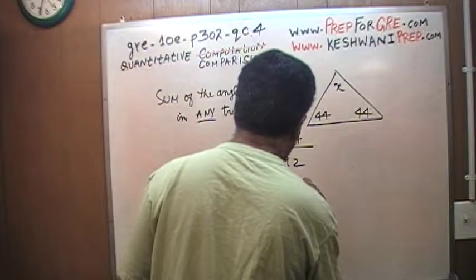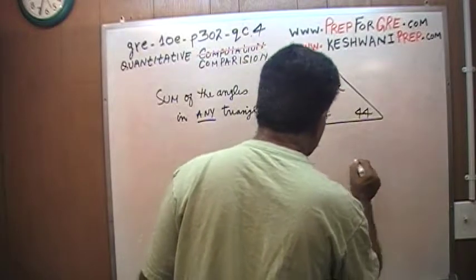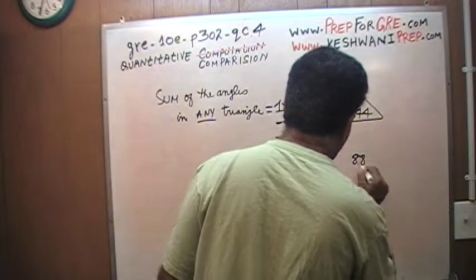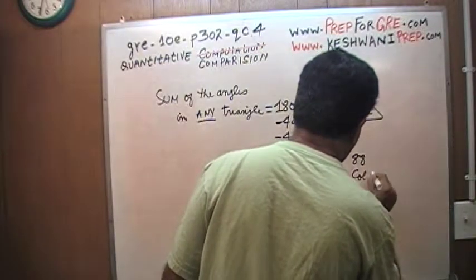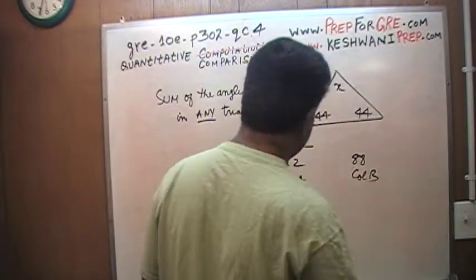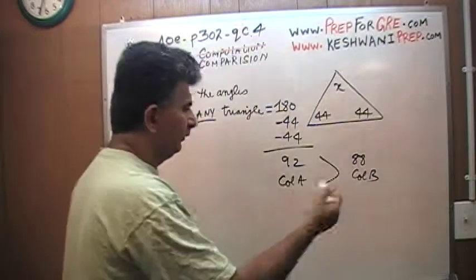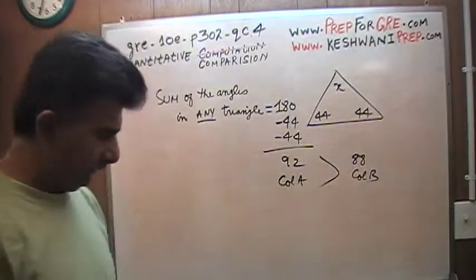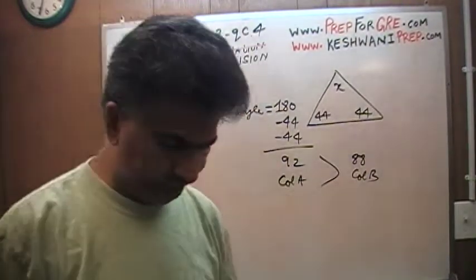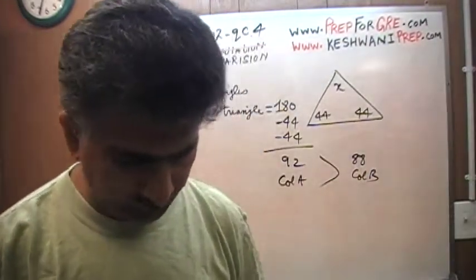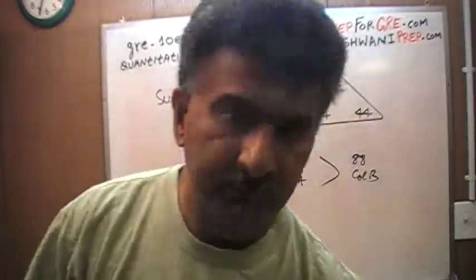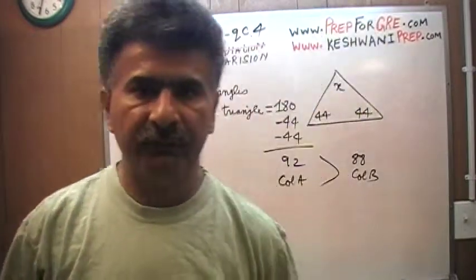That's column A: 92. And column B is 88. Of course, 92 is bigger than 88 — that's all, we're done. Nothing to it; as I said, they're simple, very straightforward.